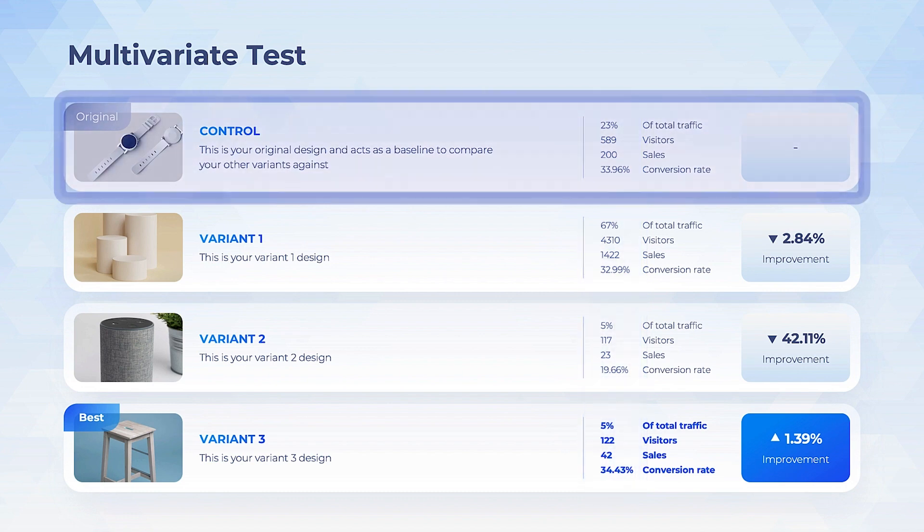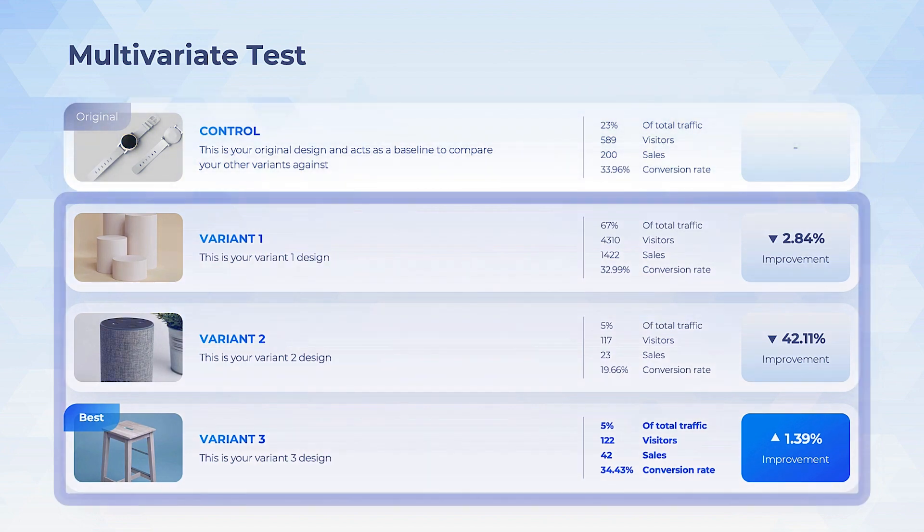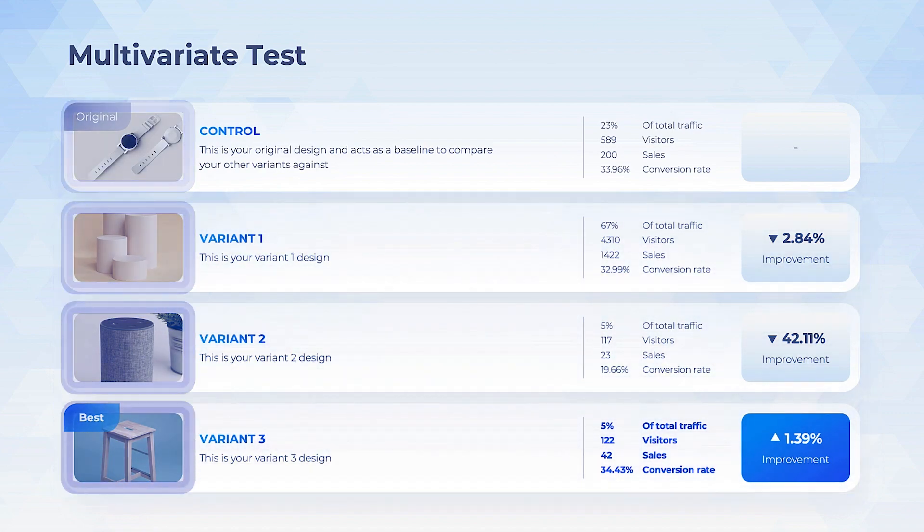First, list the control of the experiment. This is the current version that customers have been seeing. Then, list the variations you're testing. In most cases, it'd help to add a picture of what the variation looks like.